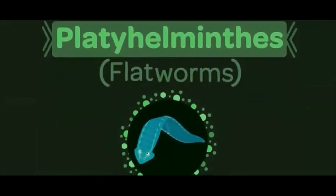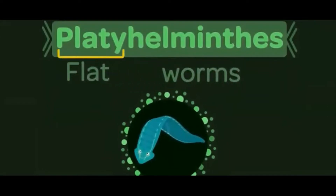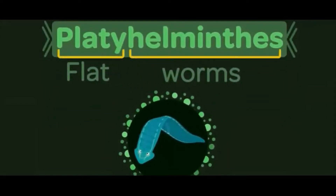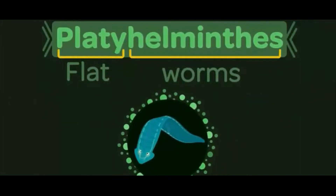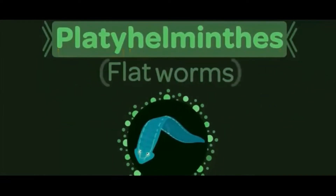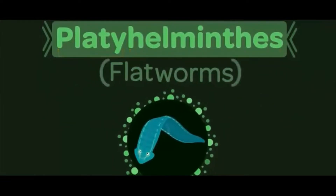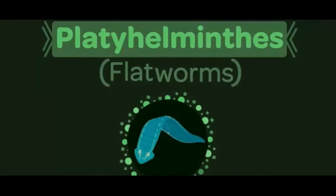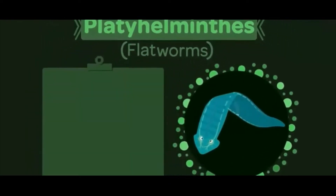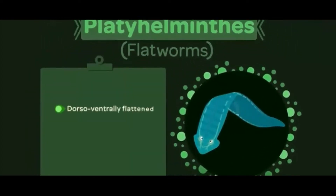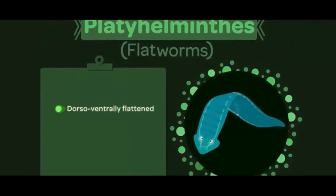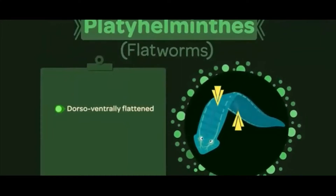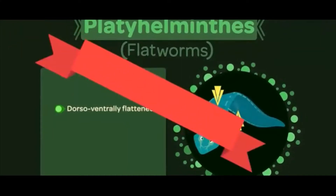As the name says, 'platyhelminthes' indicates flat and helminth indicates worms. These are all flatworms. That means the body is usually ribbon-like flat, also known as dorsoventally-flattened body — flat from the upper and lower side like a ribbon.